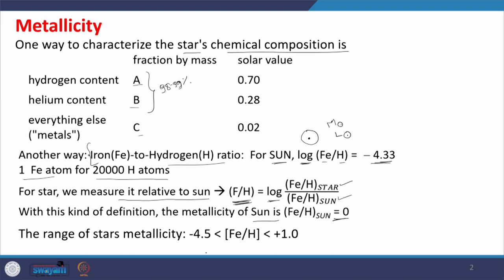The range of stars' metallicity: with this definition, if we see the iron-to-hydrogen ratio, metallicity ranges from minus 4.5 to 1. I also want you to remember the other numbers: luminosity ranges from 10 to the power of minus 4 to 10 to the power of 6; mass ranges from about 0.1 to 100. Most stars are comparable to or equal to the mass of the sun; stars above this are very rare, and above 100 solar masses, stars have not been identified.